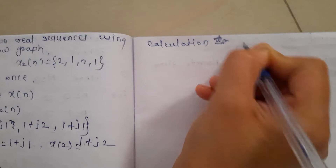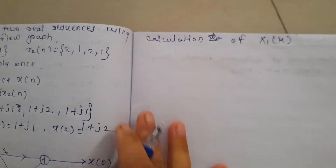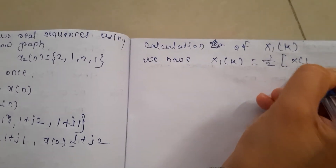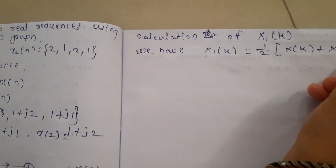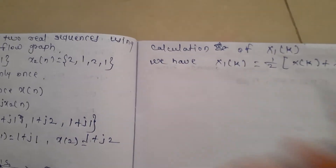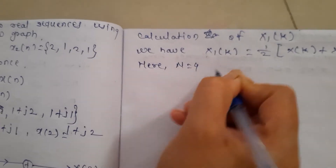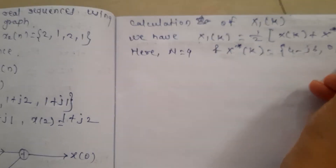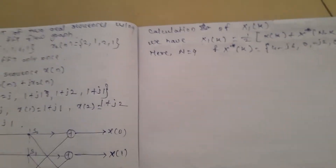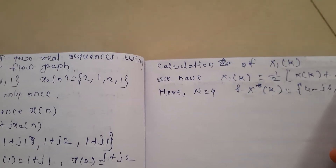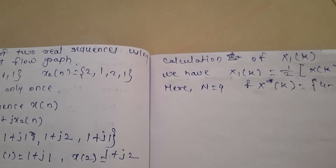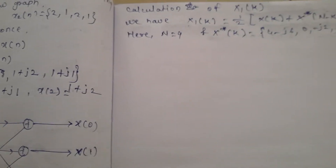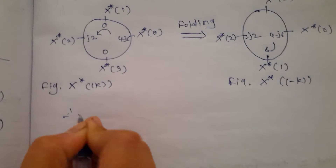Next part is the calculation of X1(k). We use the equation involving the complex conjugate. Here N = 4, and the complex conjugate of X(-k) represents a circular folding of X(k). We draw the figure for circular folding. The circularly folded sequence X*(-k) gives values: 4 - j6, 0, -j2, 0.